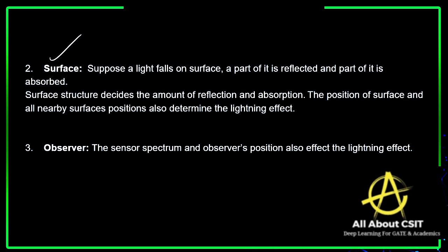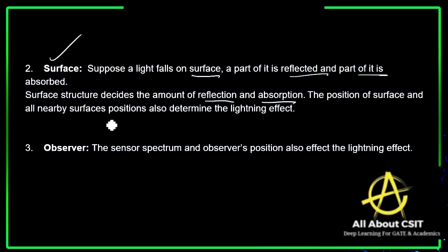The second factor is the surface. What type of surface the light is reflecting on is very important. When light falls on a surface, a part of it is reflected and a part is absorbed. The surface structure decides the amount of reflection and absorption. The position of the surface and all nearby surfaces also determines the lighting effect.